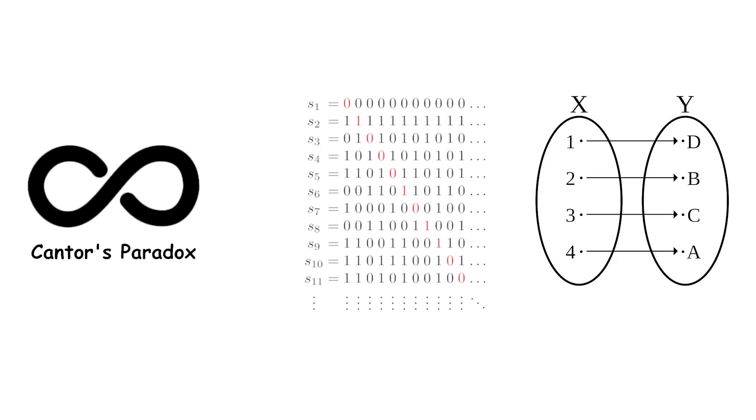In simpler terms, even though A might have a certain number of elements, its power set, P of A, includes every possible way to group these elements into subsets. This results in P of A having more subsets than there are individual elements in A.